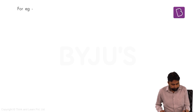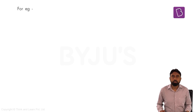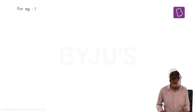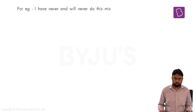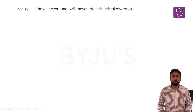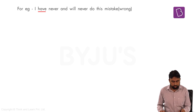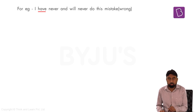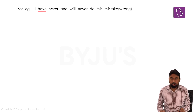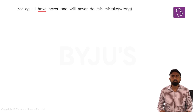Let's first go for the example. There are two tenses used in this particular sentence, and you have to see whether the tense form is correct or not. The sentence is: 'I have never and will never do this mistake.' You can see there are two tenses — one with 'have' (I have never) and the other with 'will' (will never do), which is simple future tense.